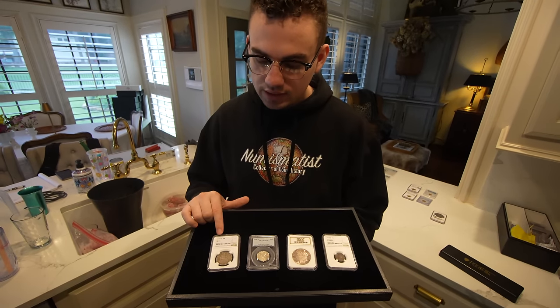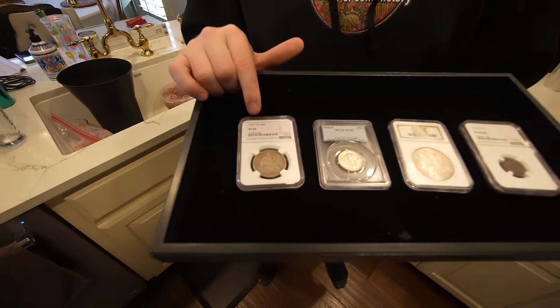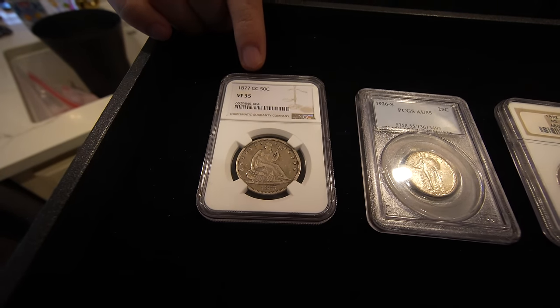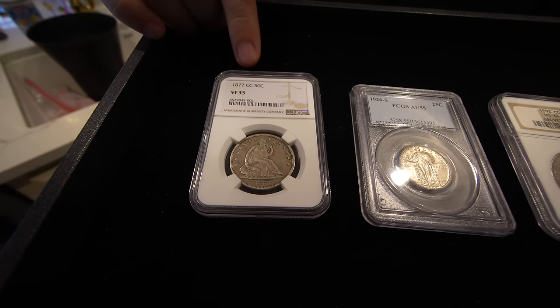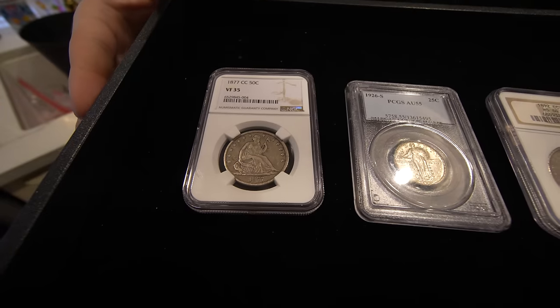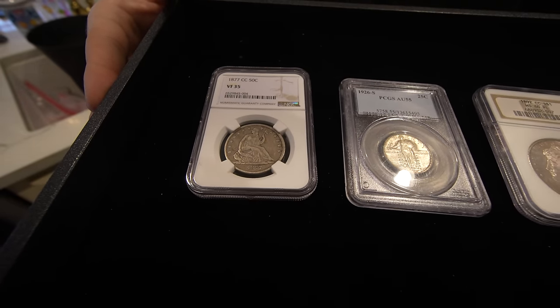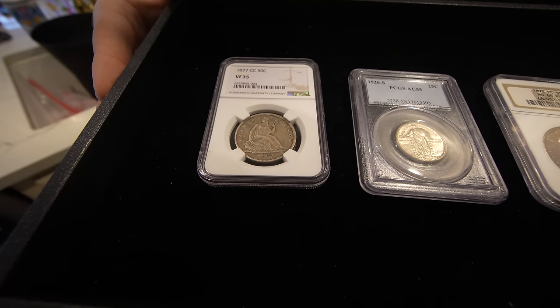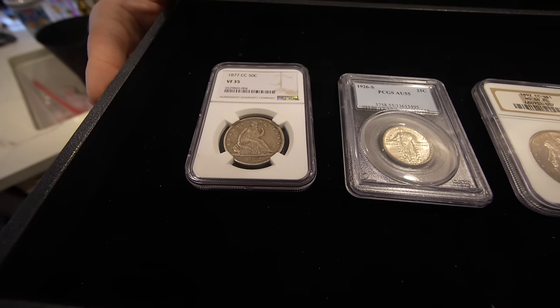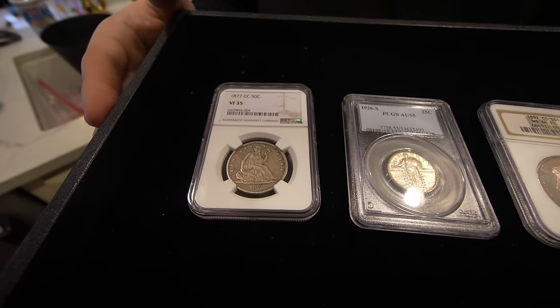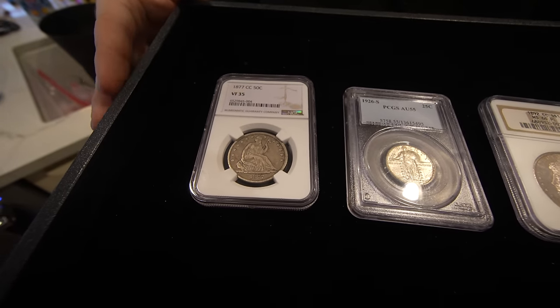So we ended up buying this 1877 Carson City seated half dollar this weekend. It's graded VF 35. You know, it has a lot of good original things to it. It's a little toned on the back. But when you're looking at this in terms of availability, a lot of these haven't been offered in many years for auction. And so we saw this coin and we thought, man, let's give it a shot, try to pick it up because this date is highly sought after and the supply is very low.